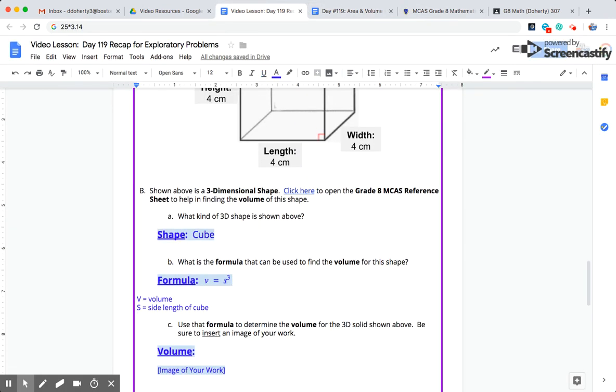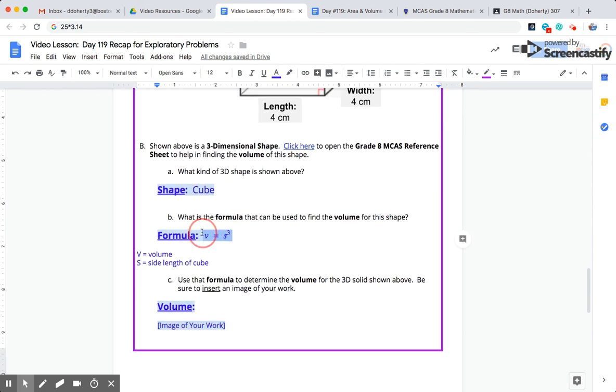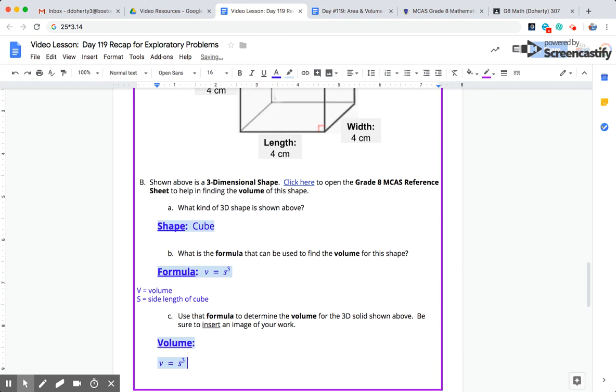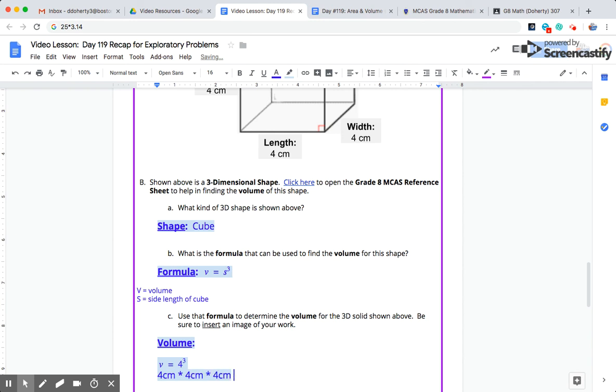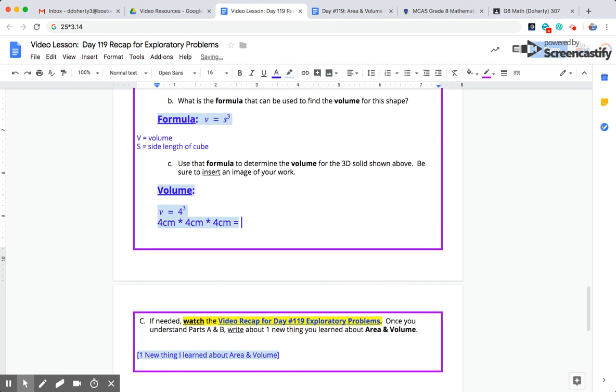Now as we see, this formula is pretty simple. Once we know s, the side length, that's all we need to find the volume. So I'm going to copy this formula down to here as part of my work: V equals s cubed, and I know the side length is 4. So all we're going to have to do is 4 to the third power, 4 centimeters times 4 centimeters times 4 centimeters. And hopefully you remember from our work on cube roots and exponents that 4 to the third power is 64.